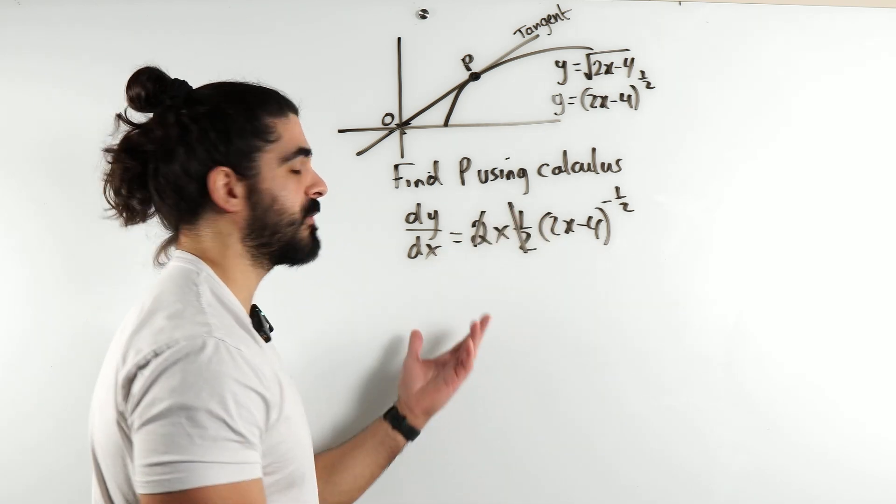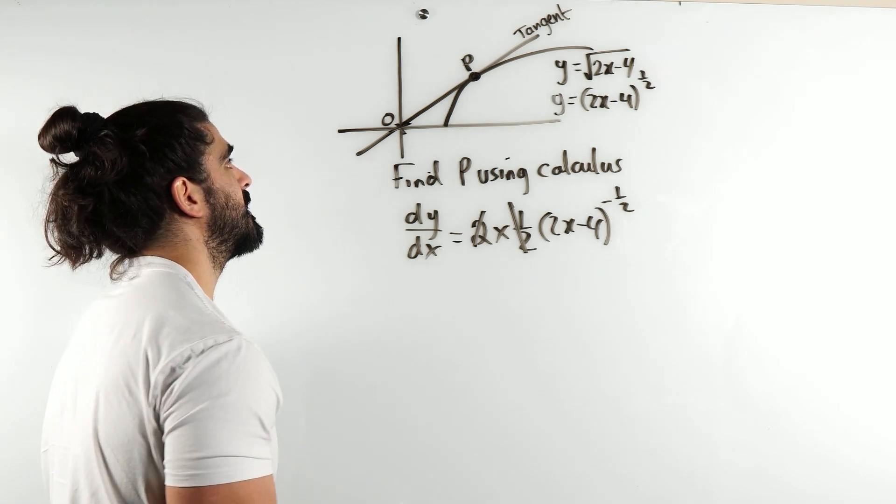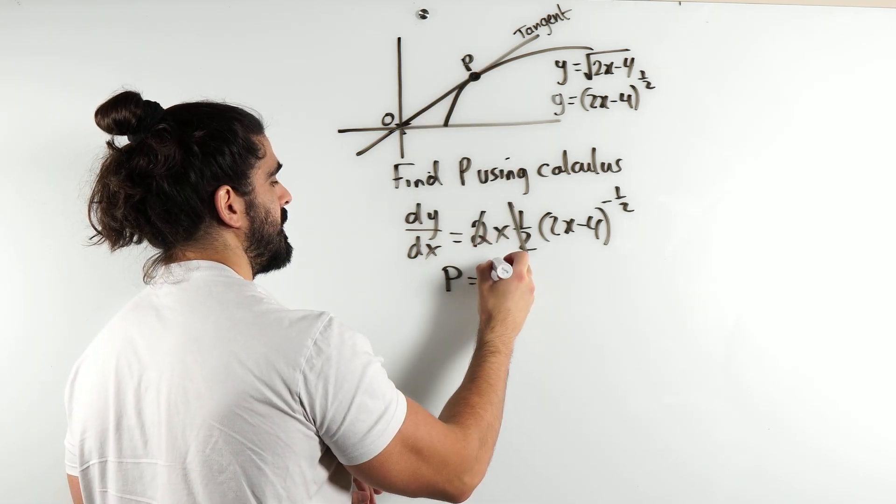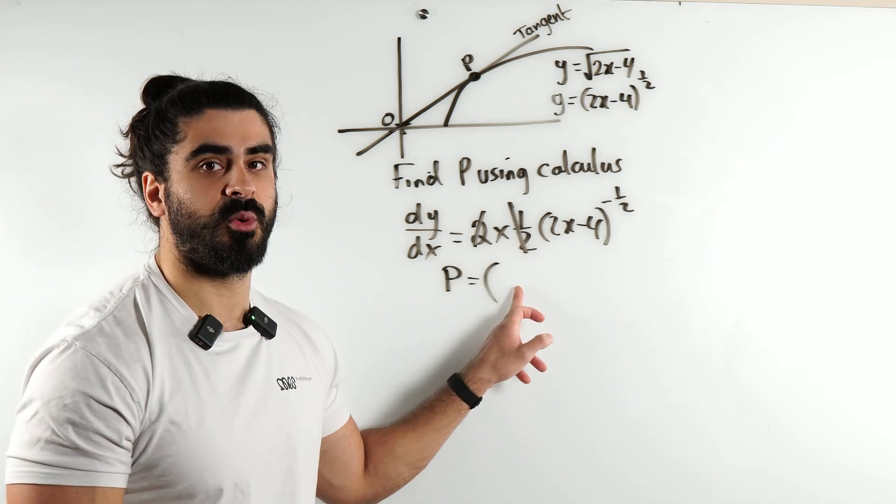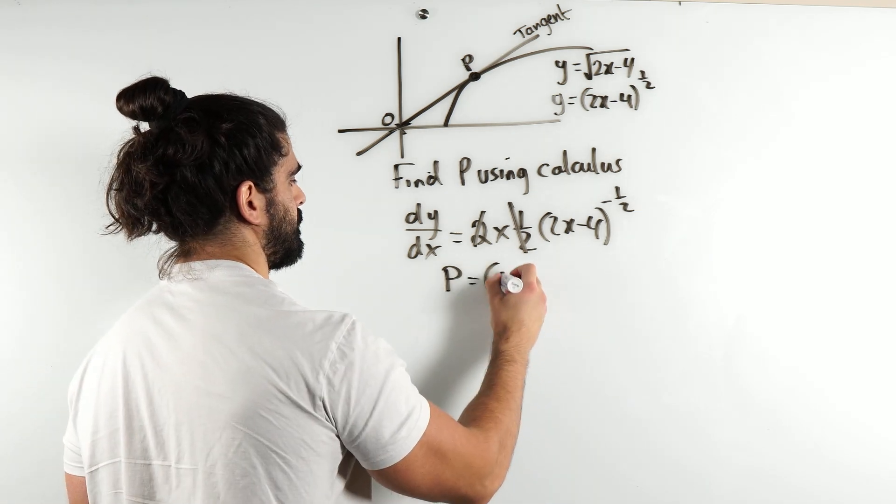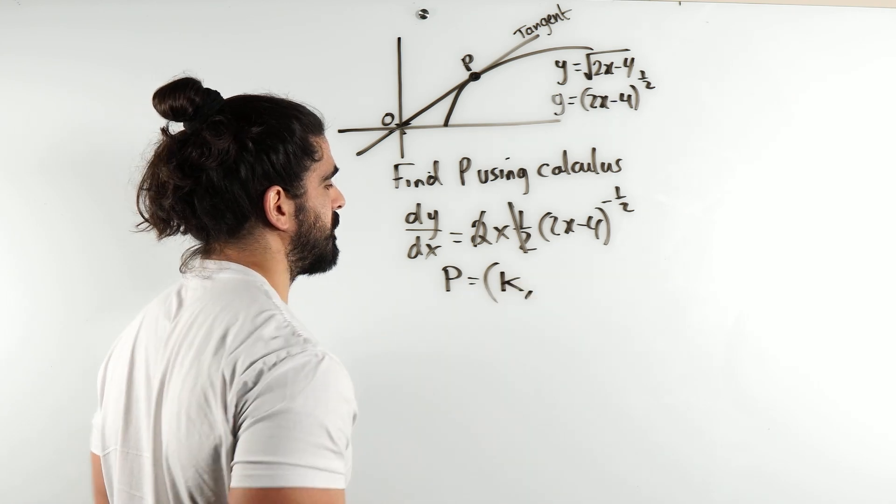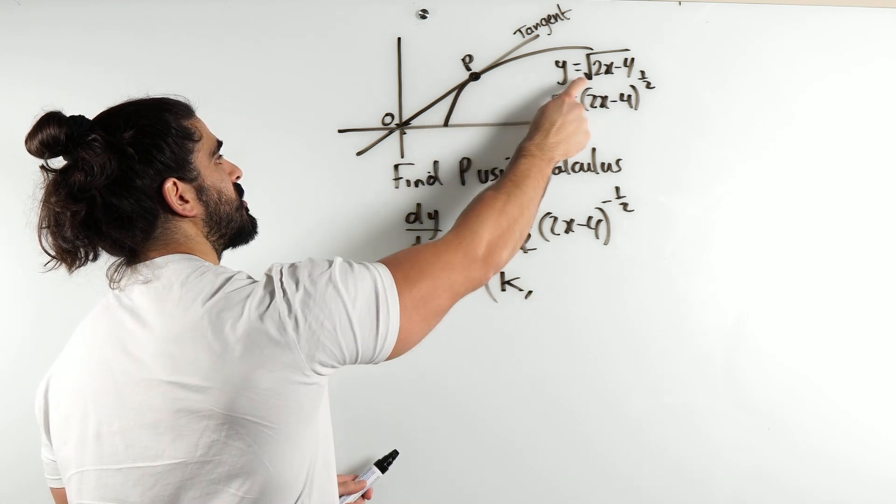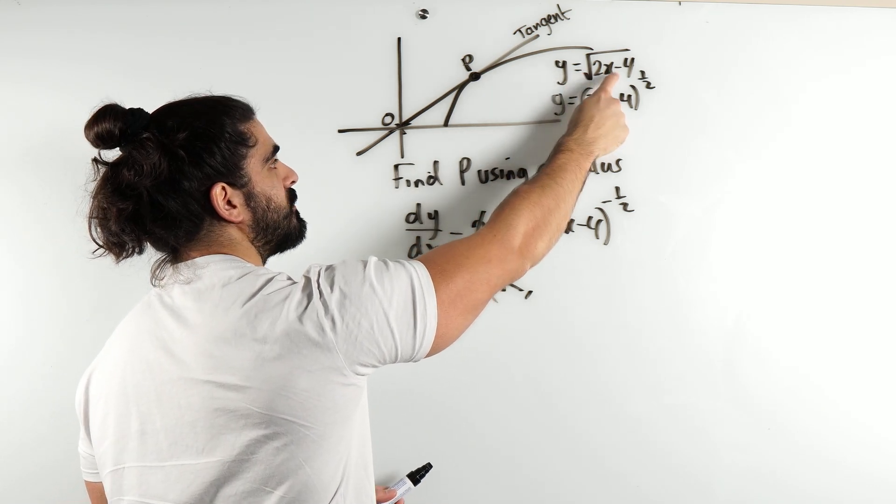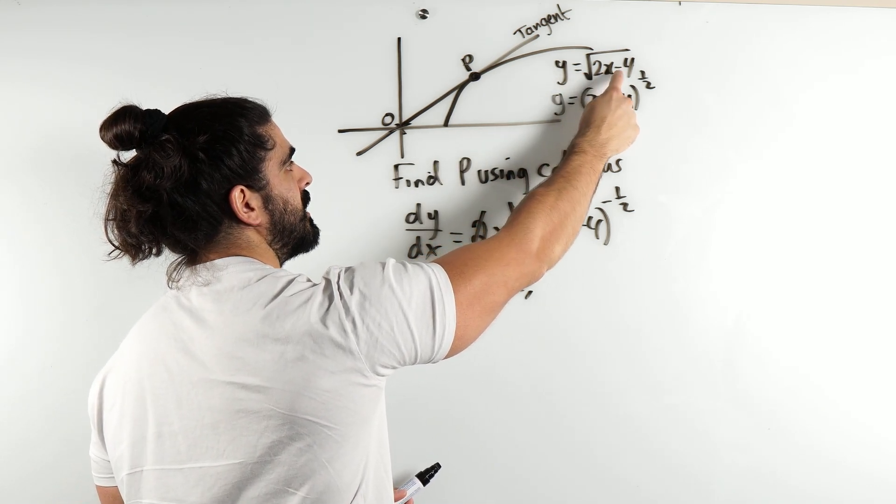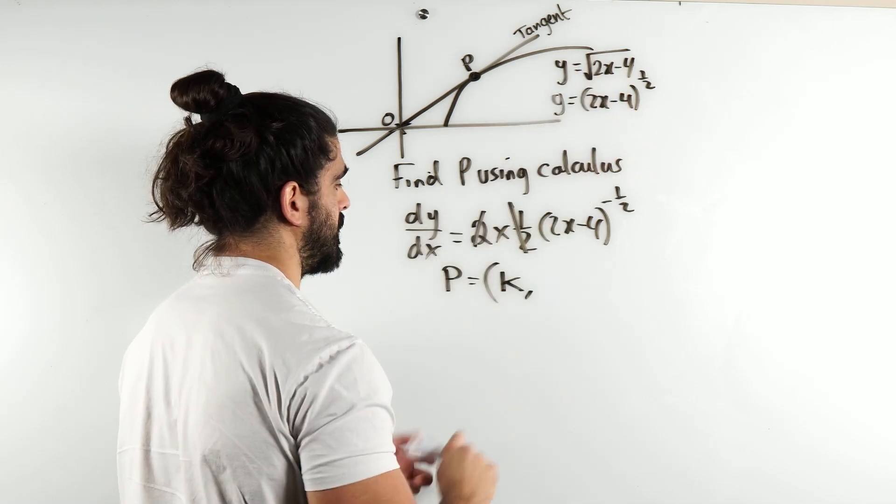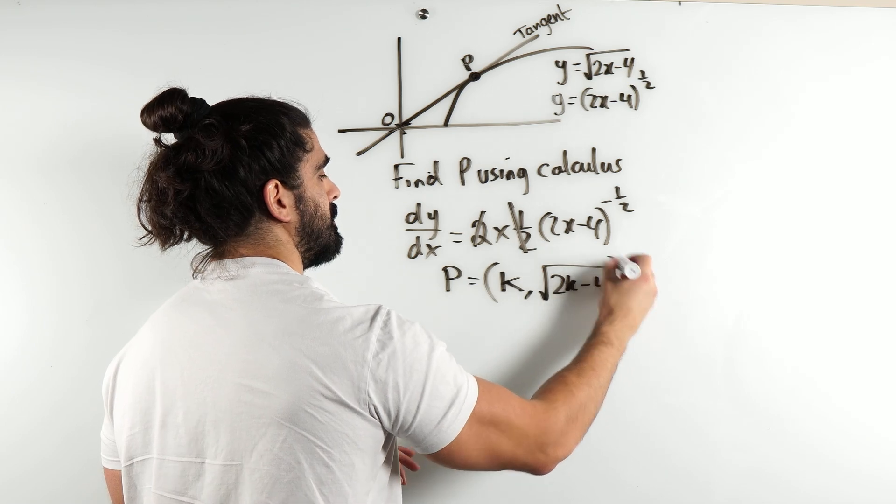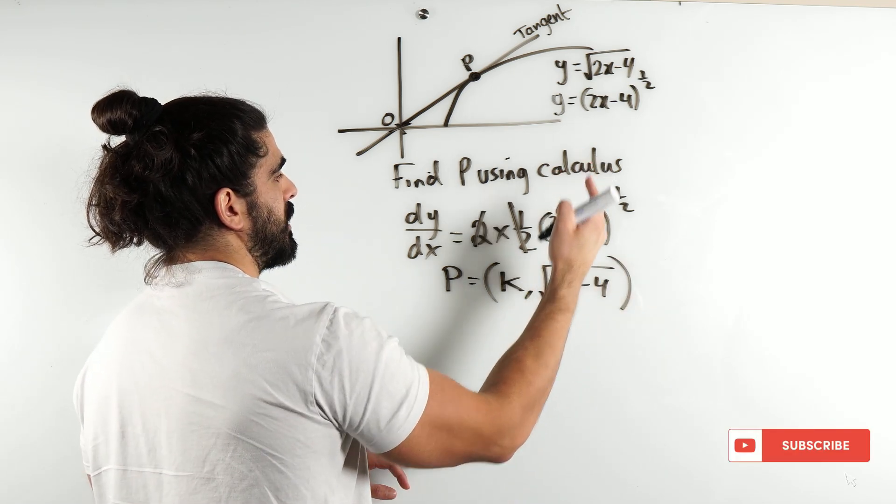Now, the next thing is how do we find the gradient when we don't have P? Well, we're trying to find it. So, what I'm going to do is I'm going to let P be, I don't know, let's give it an x-coordinate of k. We don't know what its x-coordinate is. We're trying to find it. What would its y-coordinate be? Well, we know P lies on this curve. So, we can sub into here, find the y-coordinate. It will be 2k minus 4 rooted. So, root of 2k minus 4. Now, we can find the gradient then.